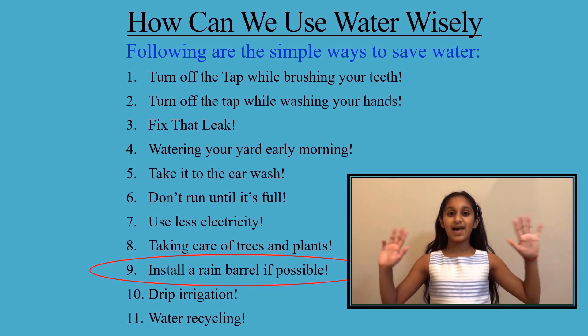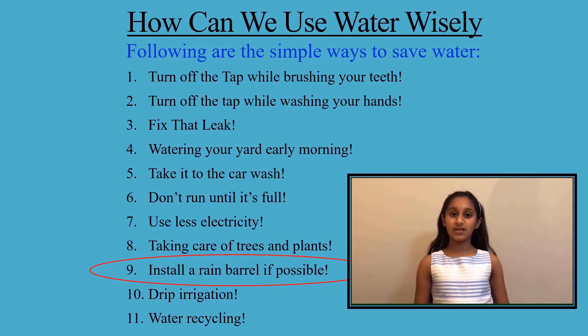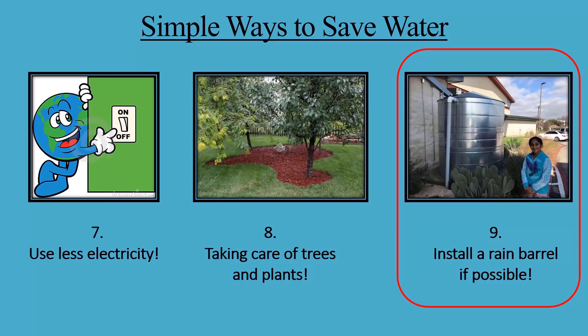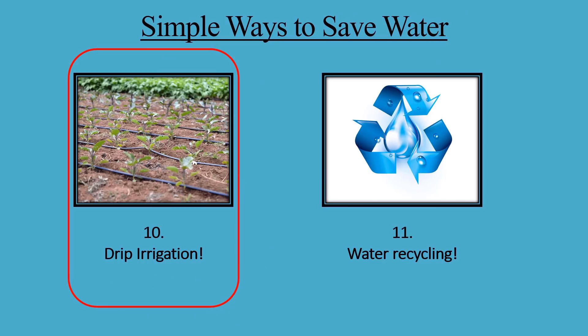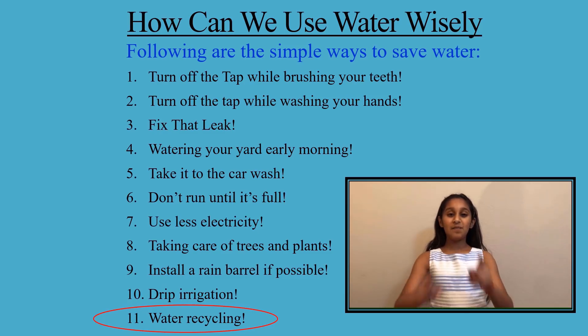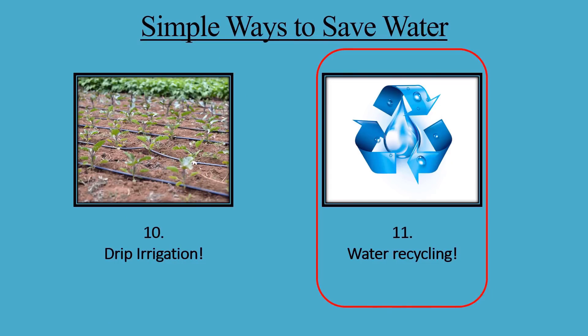Number nine: install a rain barrel if possible. Rainwater harvesting is a great way to keep your plants hydrated without turning on the hose or sprinkler. Number ten: drip irrigation. Drip irrigation helps to save a lot of water. Number eleven: water recycling. Recycled water is another great way to save water.